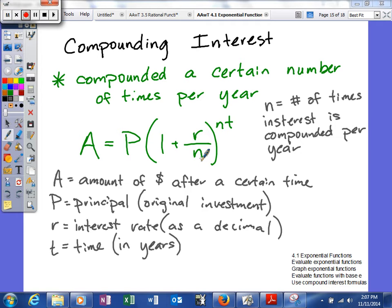Where A represents the amount of money after a certain time, P is the principal, spelled just like that, just like principal, and that's your original investment.